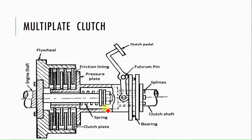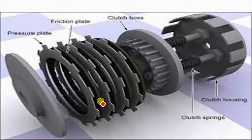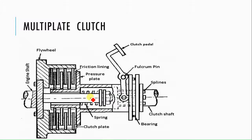Another type of clutch is called the multi-plate clutch. This is another version of the single plate clutch in which there are multiple plates. As we have already learned about the single plate clutch, in the multi-plate clutch there is an alternate arrangement of friction plates and pressure plates.